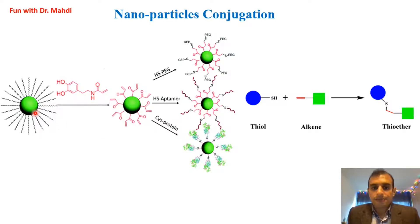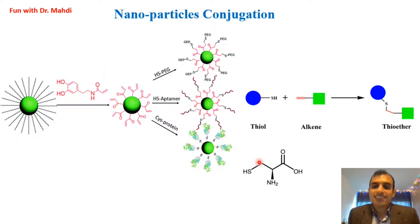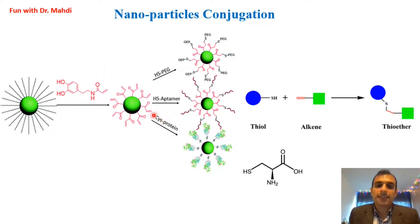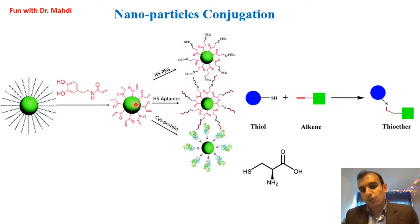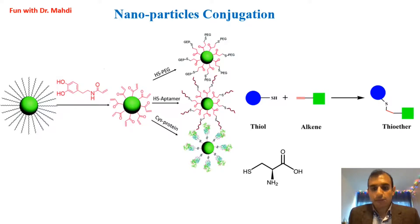Another type of bioconjugation: we would like to have a protein on the surface of a nanoparticle. In this case, we can use proteins with a cysteine group. Here you can see the structure of cysteine — it is an amino acid, and in its structure we have a thiol group. The thiol in cysteine can participate in a reaction with the alkene, and after the click reaction we can have the protein on the surface of the nanoparticle — we have bioconjugated the nanoparticle with a protein.